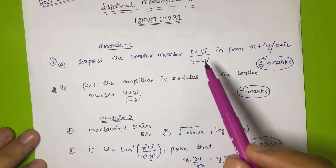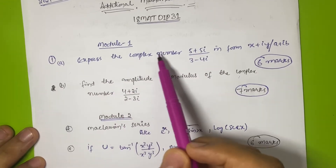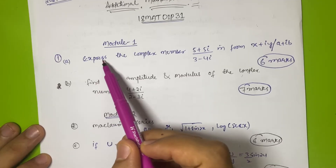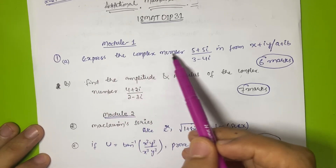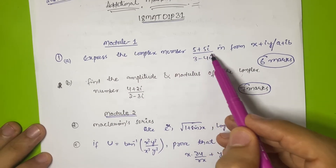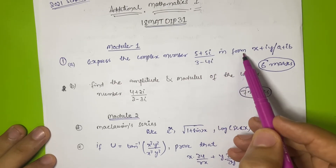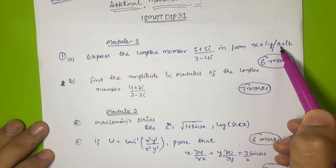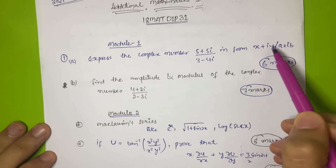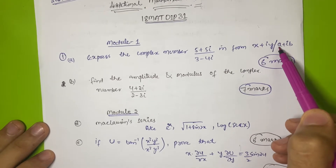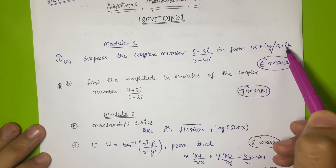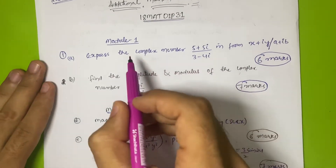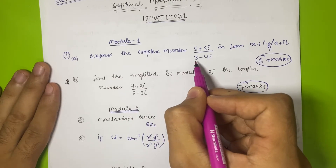In Module 1 you only have to play with complex numbers - it is also a pre-university topic. The question will be like: express the complex number (5 + 5i) / (3 - 4i) in the form x + iy. Sometimes they will give you the a + ib form - this is the same, just using a instead of x and b instead of y.